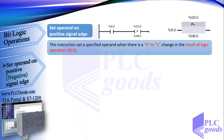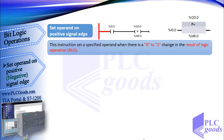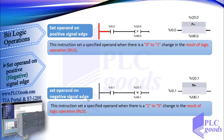Let's see the last instruction in this video: set operand on positive or negative signal edge. Like the previous, but this instruction is used as an output. It sets a specified operand for only one program cycle when there is a zero-to-one change in the RLO. When I0.0 changes to closed, the RLO changes from 0 to 1, which this instruction detects, and changes Q0.0 from 0 to 1 for one program cycle — about 5 ms. Similarly, set operand on negative signal edge works when there is a one-to-zero change in the RLO.